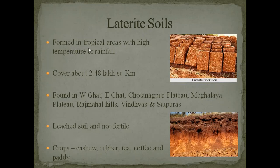Laterite soil is formed in tropical areas with high temperature and heavy rainfall. It covers about 2.48 lakh square kilometres. It is formed in the Western Ghats, Eastern Ghats, Chhotanagpur Plateau, Meghalaya Plateau, Rajmahal Hills, and Vindhya and Satpura Mountains. This is a leached soil and is not fertile — not suitable especially for food crops.